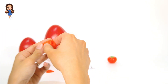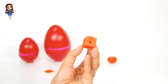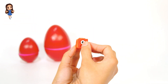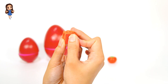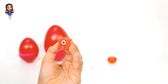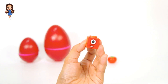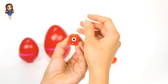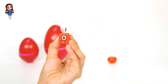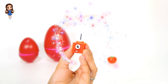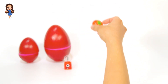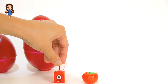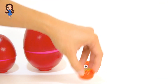We found a red cube. Now let's count: one. Let's put the face plate on. Do you know who this is? It's Number Block one! Number Block one, red tomato.